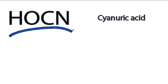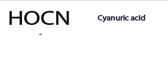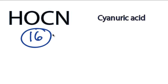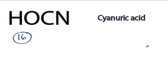This is the HOCN Lewis structure. We have a total of 16 valence electrons for HOCN. Hydrogen always goes on the outside of Lewis structures, and when we look at the oxygen, nitrogen, and carbon, carbon's going to be the least electronegative, so let's put that in the center.